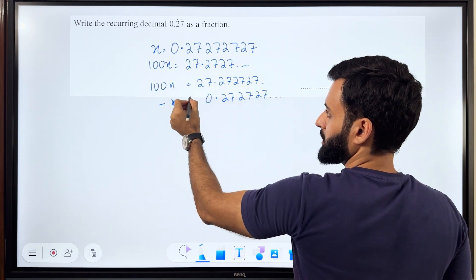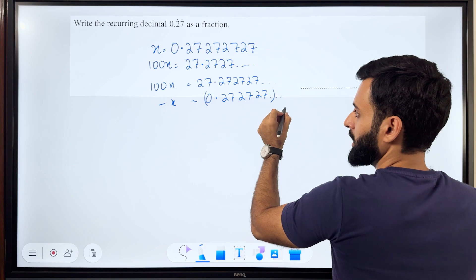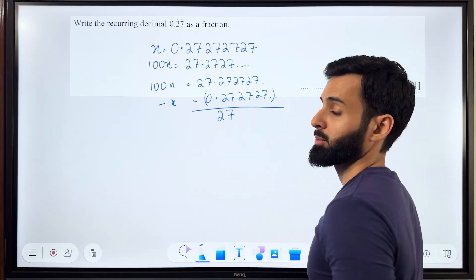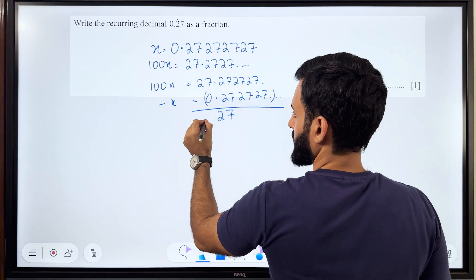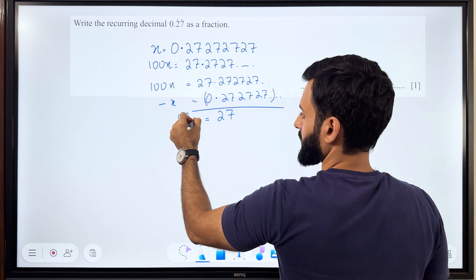If I subtract the two, I will be simply left with 27, and what is that equal to in terms of x? That is equal to 99x.